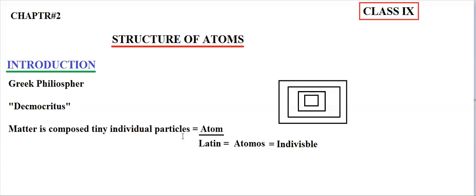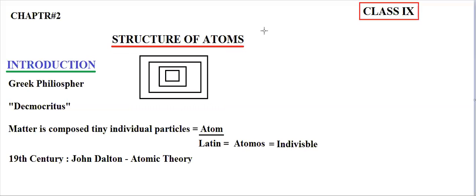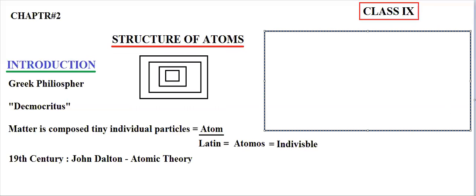Students, the scientific background is introduced in 19th century. In the 19th century, we have a scientist named John Dalton. John Dalton forwarded a theory called Atomic Theory. In this atomic theory, atom has been elaborated in a better way. Different concepts have been explained in scientific background and scientific ways. The theory of John Dalton was based on basic postulates, based on main points.